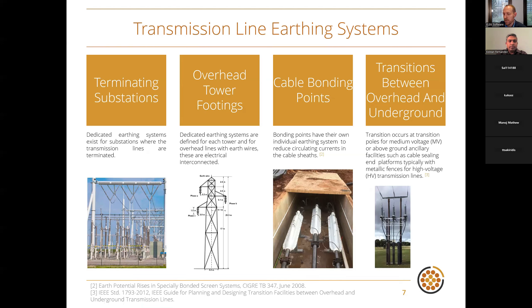Transmission line earthing systems involve many different interconnected systems. At both ends, substations have their own earthing systems interconnected with systems along the line, including overhead tower footings, cable bonding points, and transition locations such as transition poles or ancillary facilities — all of which have their own earthing systems. All of these need to be considered because they are interconnected, and there are complex current pathways during earth fault conditions.